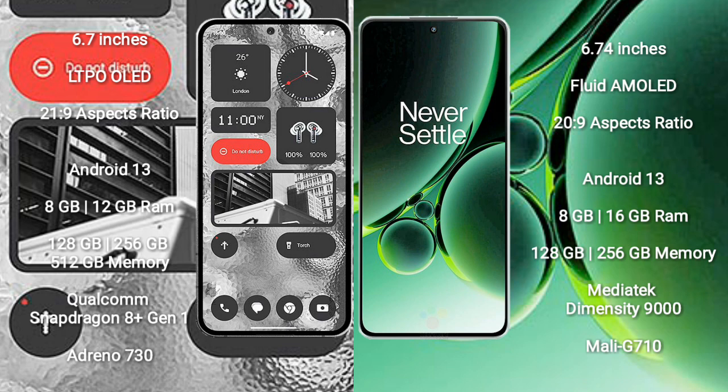Both the Nothing Phone 2 and the OnePlus Nord 3 run on the Android 13 operating system. Nothing Phone 2 comes with 8GB and 12GB RAM options and 128GB internal storage.